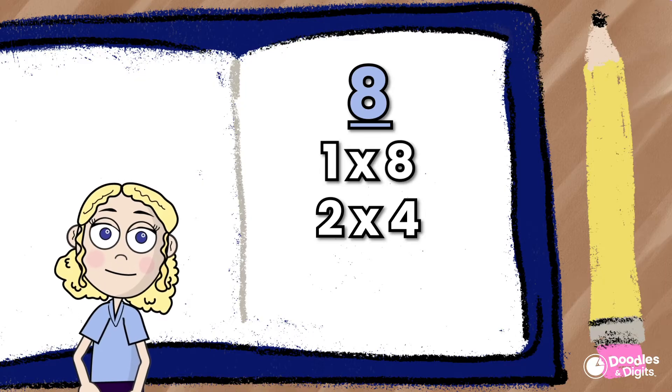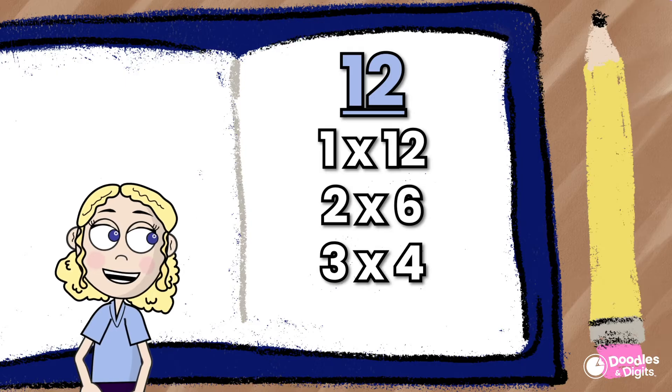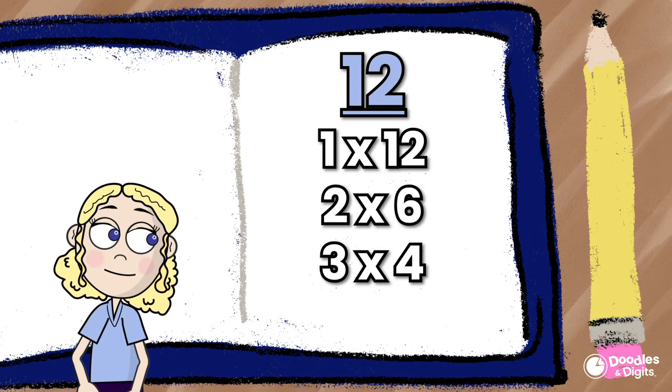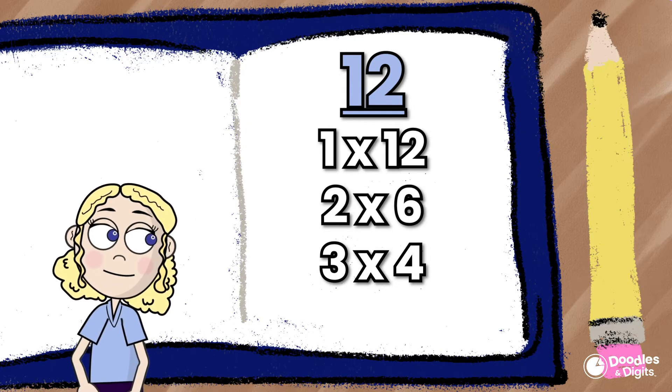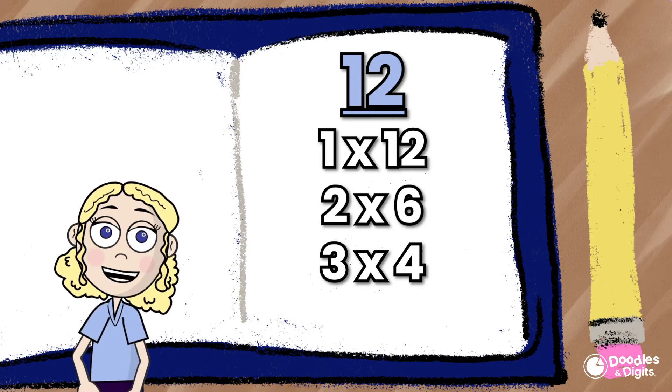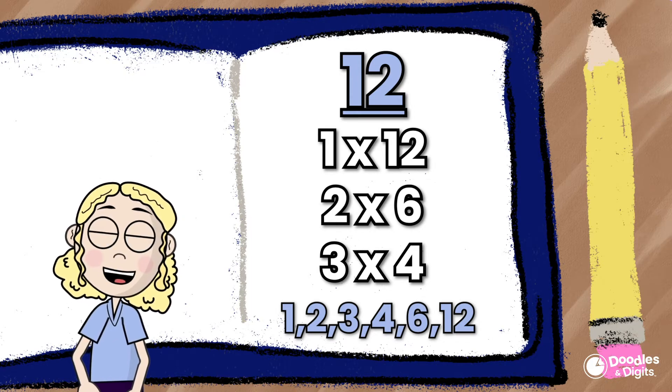Here's another example. Let's look at the factors of 12. 1 times 12 equals 12, 2 times 6 equals 12, and 3 times 4 equals 12. So the factors of 12 are 1, 2, 3, 4, 6, and 12.